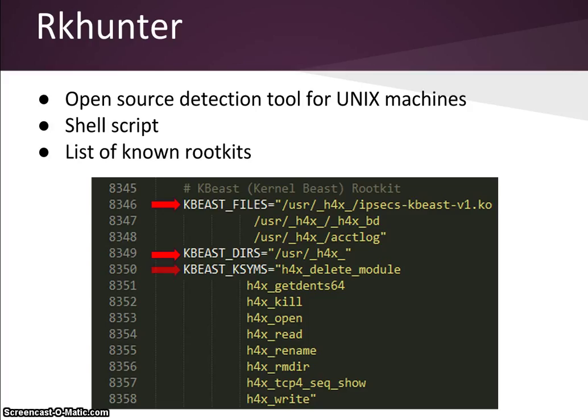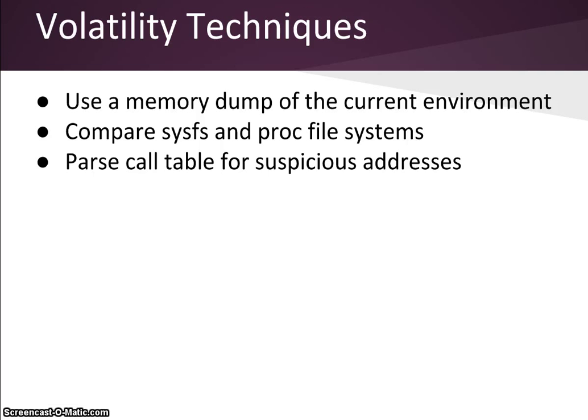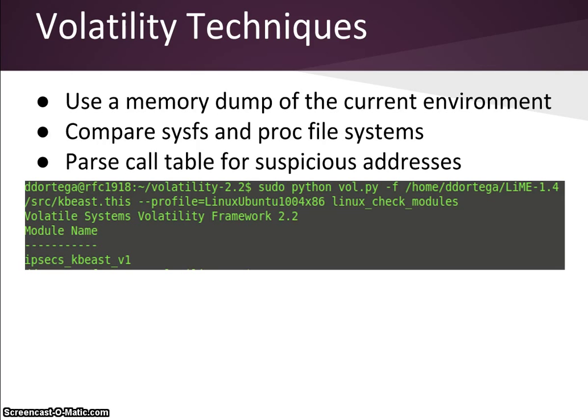Volatility is the second detection method we used. It's an open source memory forensic analysis tool. It is Python-based and compatible with Windows, Linux, Mac, and Android. In our case it was used with Lime, an open source LKM that extracts memory from Linux and Linux-based devices. Volatility detects a rootkit's presence by analyzing a memory dump of the current environment. It detected K-beast's hidden kernel module by comparing the outputs of the SysFS and PROC file systems and looking for differences between the two. It was also able to detect the hooked system calls by parsing the system call table for out-of-range addresses.